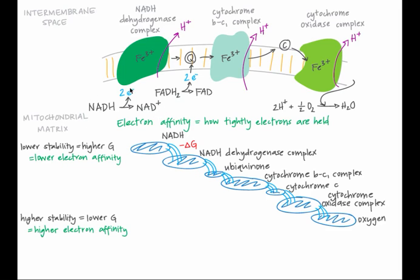Compare NADH with FADH2. NADH drops electrons off at NADH dehydrogenase complex, while FADH2 drops electrons off at ubiquinone. FADH2 has a higher electron affinity than NADH, which drops its electrons off lower down in the chain. It would be like a pool somewhere between NADH dehydrogenase and ubiquinone.